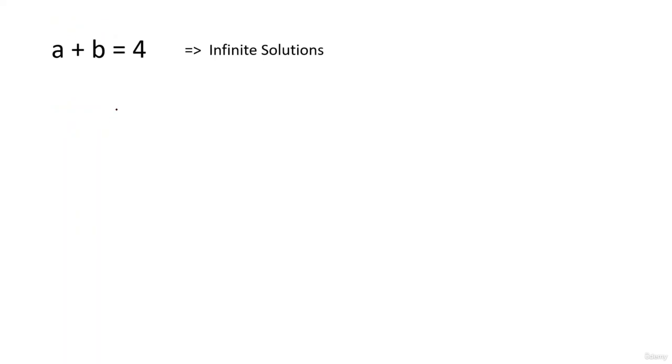But if I specify that a plus b equals 4 and a and b are whole numbers, now the number of solutions will get limited. So as and when we put the constraint on the category of numbers that we are taking, the number of solutions will always become more and more finite.